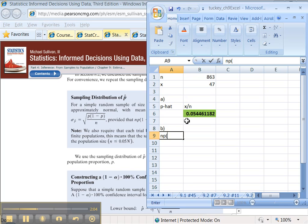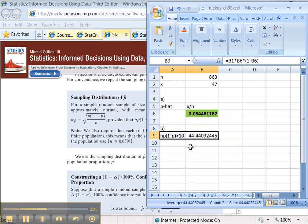So, let's check. n times p times 1 minus p. Okay, we need it to be greater than 10, or equal to 10. So, n was 863 times p. Well, your best guess for p is this one right here. So, oopsie, I forgot the times symbol. There we go. Use p hat. I mean, that's as good as you can get. Times parentheses 1 minus p hat. We're going to use p hat to stand in for p. That's as good as we can do.